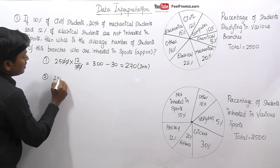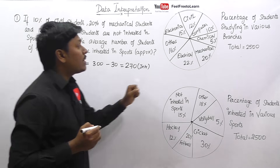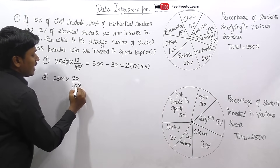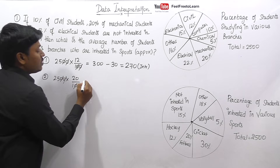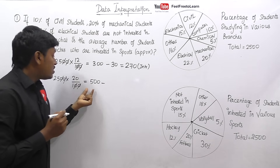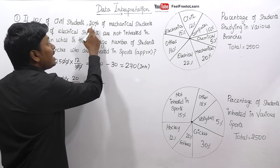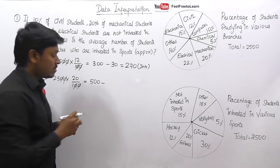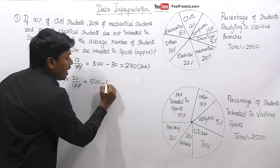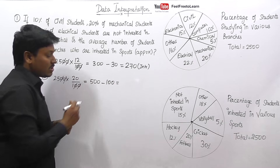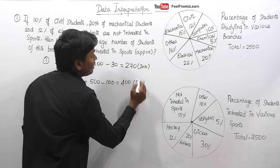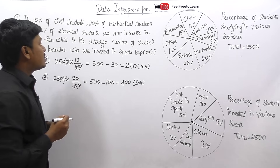Second, mechanical students: mechanical is 20% of 2500. Cancelling zeros, 25 × 20 = 500. So 500 students are in mechanical. 20% of 500 = 100 students are not interested in sports. Therefore, 500 − 100 = 400 students from mechanical are interested in sports.